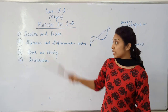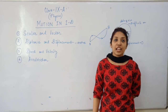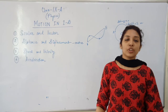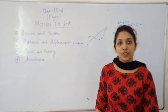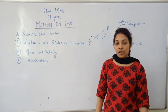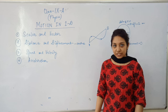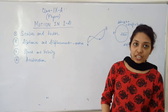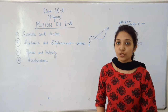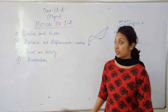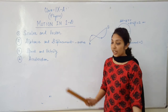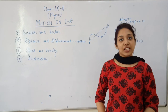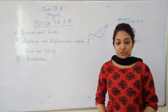In the first topic we have scalar and vector quantities. For scalar quantities we have only magnitude but no direction. In the case of vector quantities we have both magnitude as well as direction.